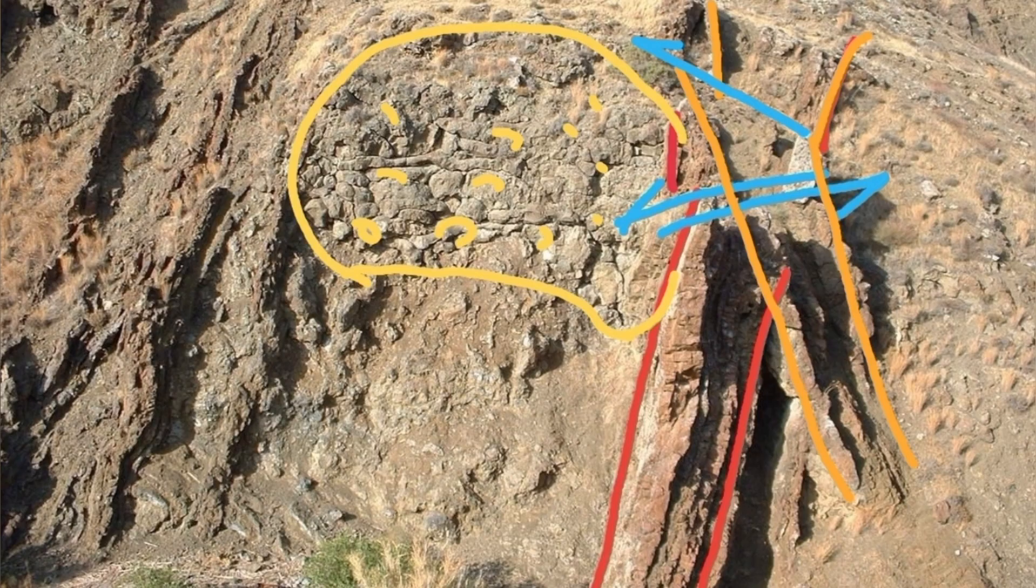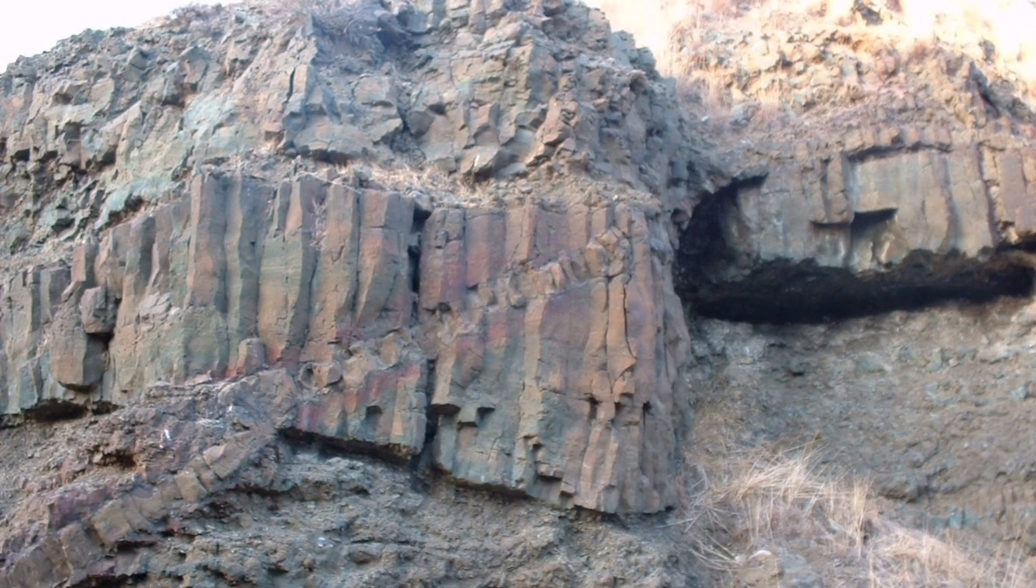But you can see the sills actually. These are very normal what we are seeing in this setting. For example, the Troodos Mountains of Cyprus, which is Ophiolite, exactly the same oceanic setting. You can see a lot of sills opening, dikes, and crisscrossing all the time. This is what we are seeing now.